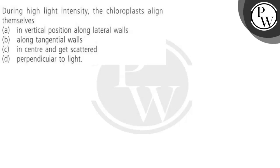Let's read the question. The question says that during high light intensity, the chloroplasts align themselves. Options are: in vertical position, along lateral walls, along tangential walls, in center and get scattered and perpendicular to light.